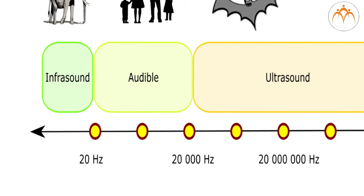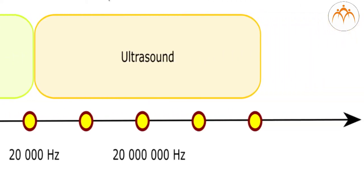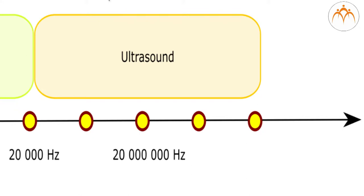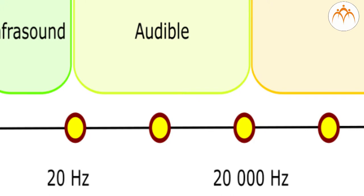Sound can be classified based on its frequency. Sound with frequencies less than 20 Hz is known as infrasound while the sound with frequencies above 20,000 Hz is called ultrasound. Range of hearing for a healthy young person is from 20 Hz to 20,000 Hz and is normally referred to as the audible sound.